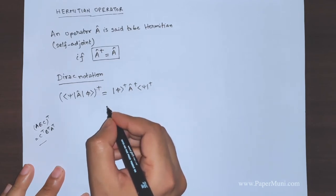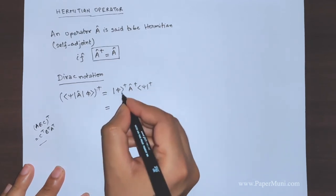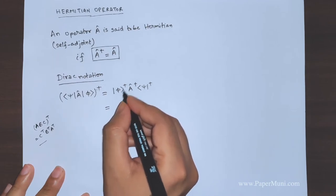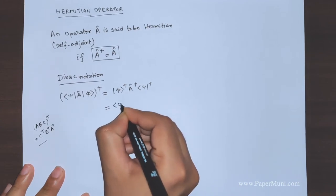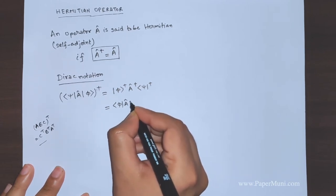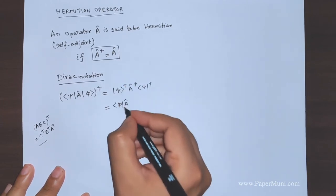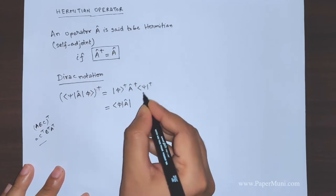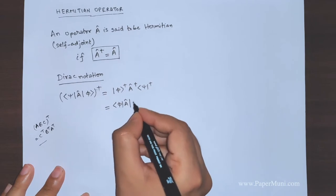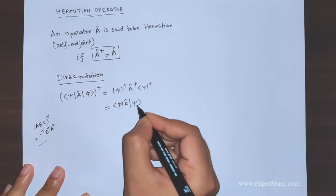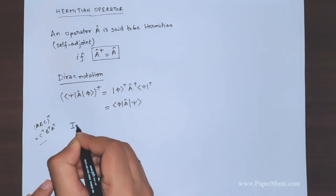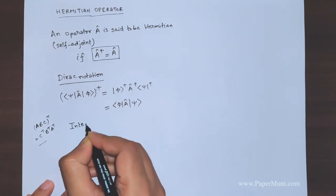We know that the dagger — or conjugate transpose — of a ket vector gives you a bra vector. A dagger should give you A back. And the conjugate transpose of a bra vector gives you a ket vector.